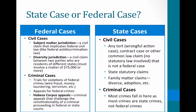Habeas corpus appeals generally argue something like: 'I was convicted below, but the court in Michigan violated my constitutional rights by not eliminating evidence found under an unlawful search and seizure.' That's a habeas corpus appeal — a criminal appeal that challenges the constitutionality of proceedings in federal or state court. State cases are pretty much everything else. Civil state cases include any tort — wrongful actions like a slip and fall or intentional infliction of emotional distress.